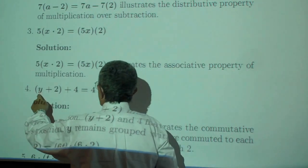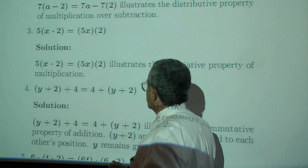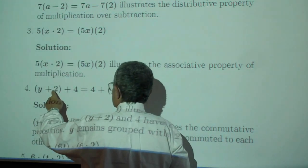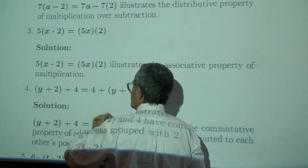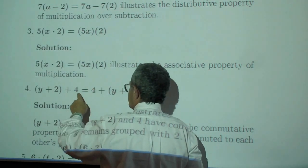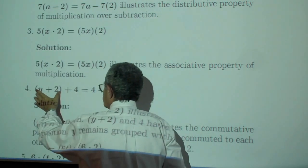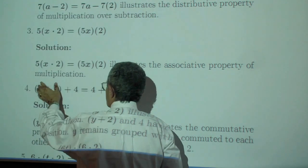Y is in first place, y is in second place. It looks like some commuting has been done. Y is in second place, two is in third place. Four has traveled from the third position to the first position, and the entire quantity y plus two has traveled from first position.